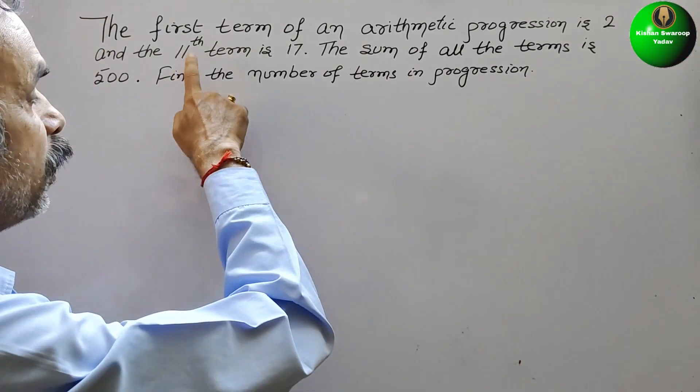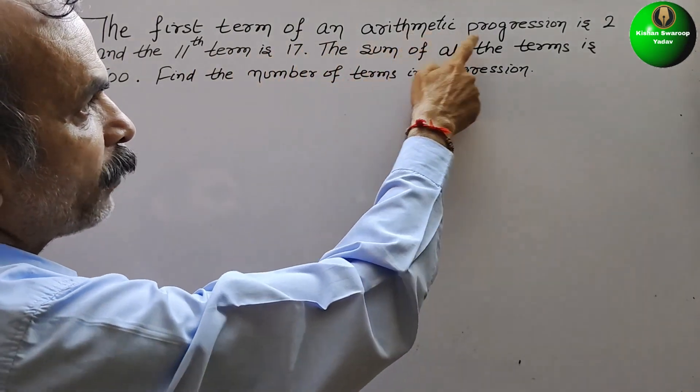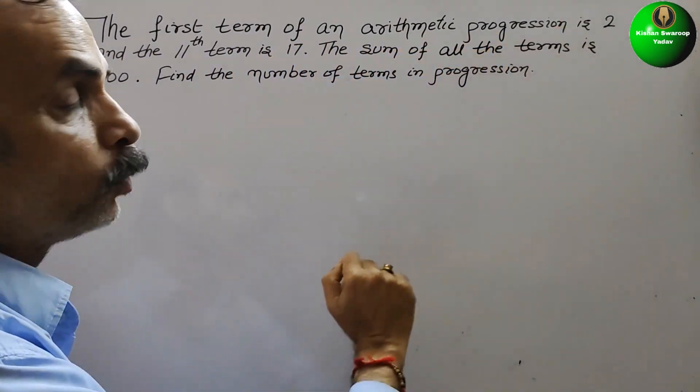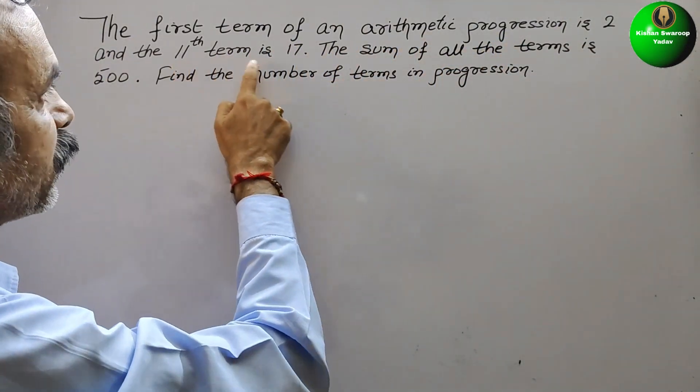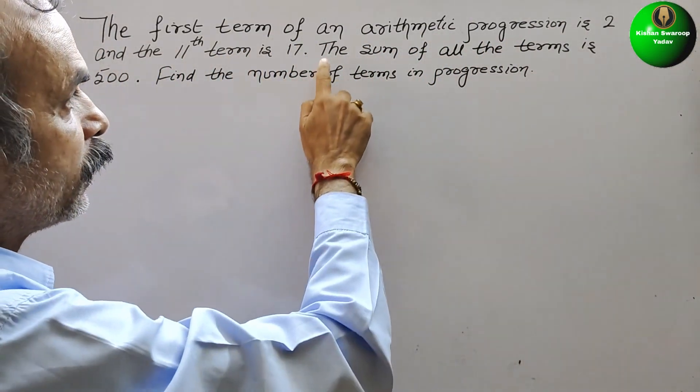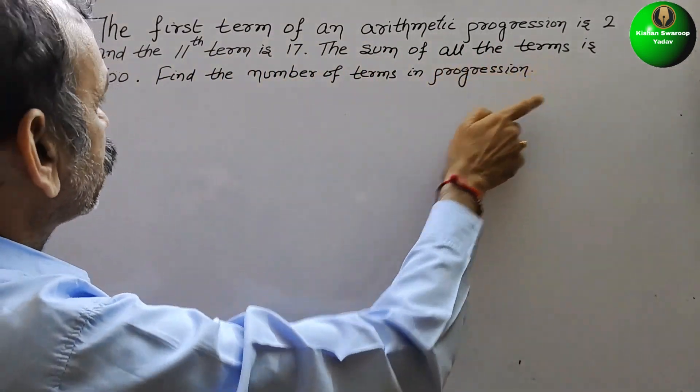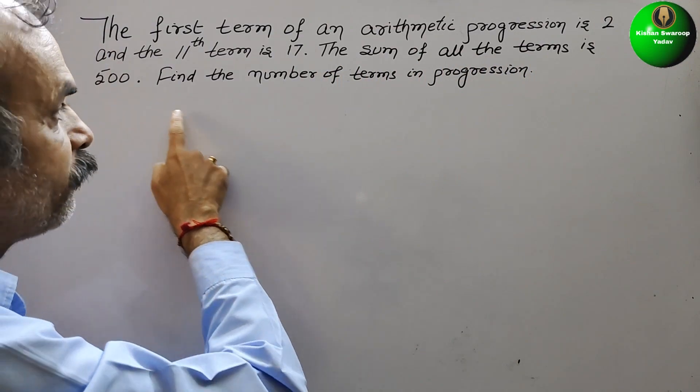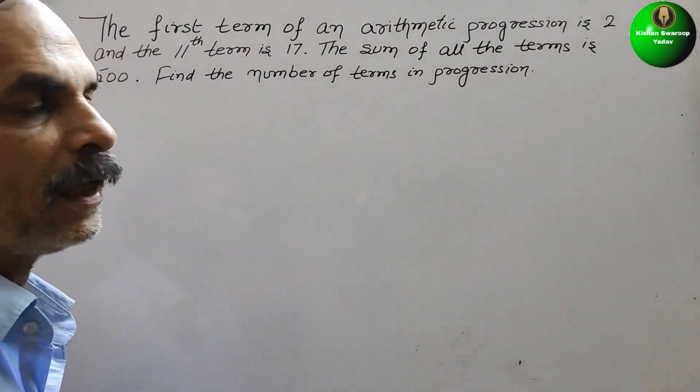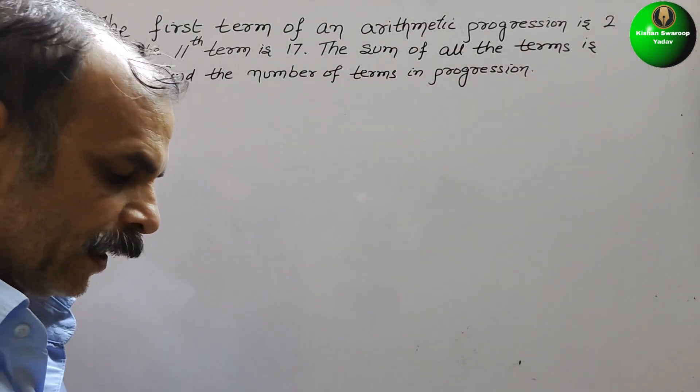Your question is: the first term of an arithmetic progression is 2, and the 11th term is 17. The sum of all the terms is 500. Find the number of terms in progression.